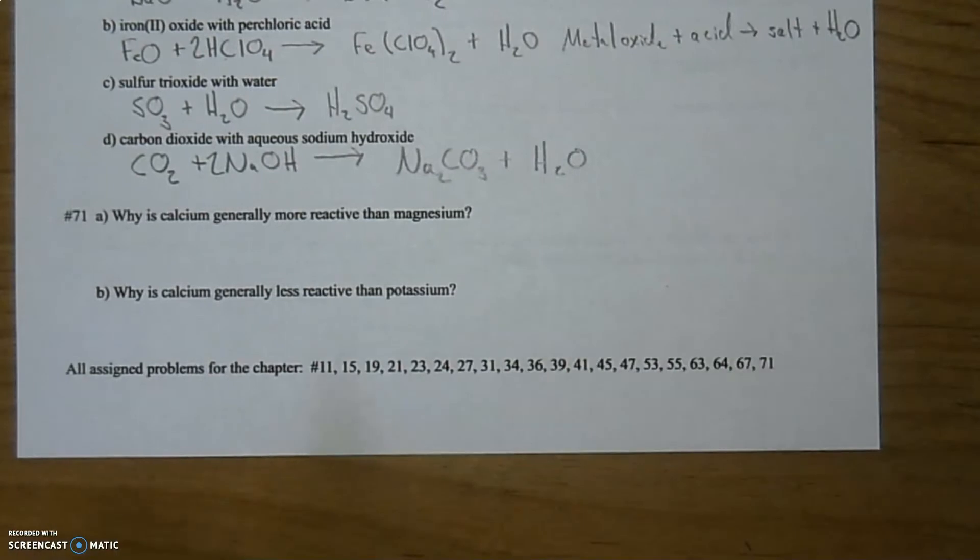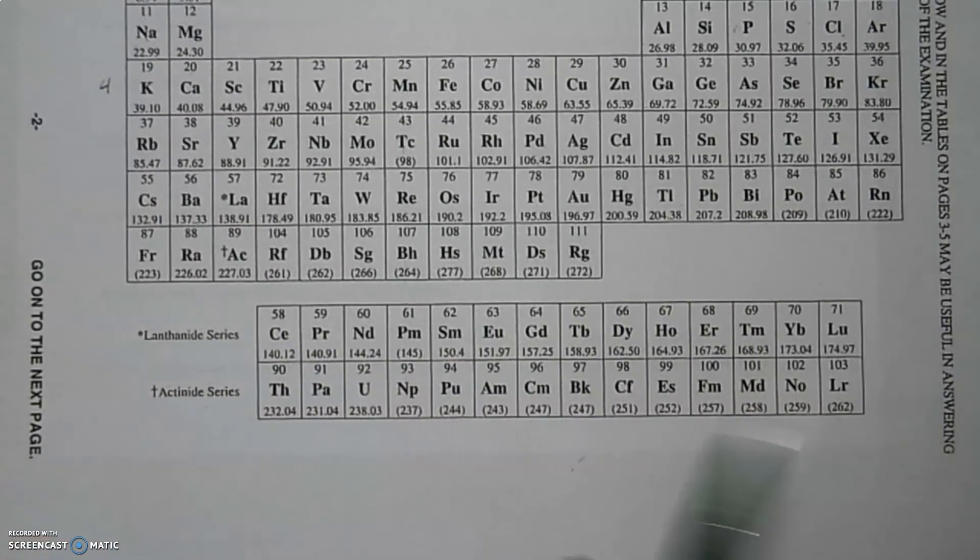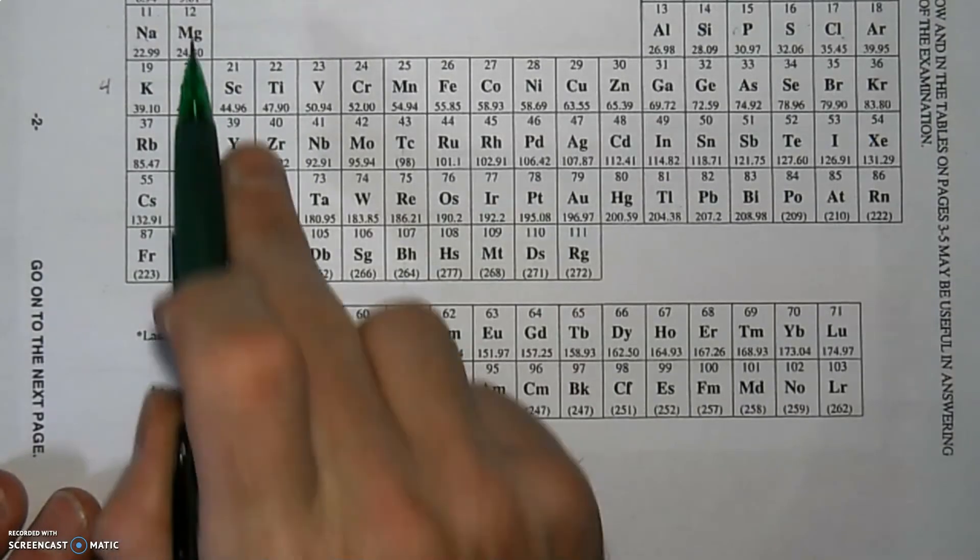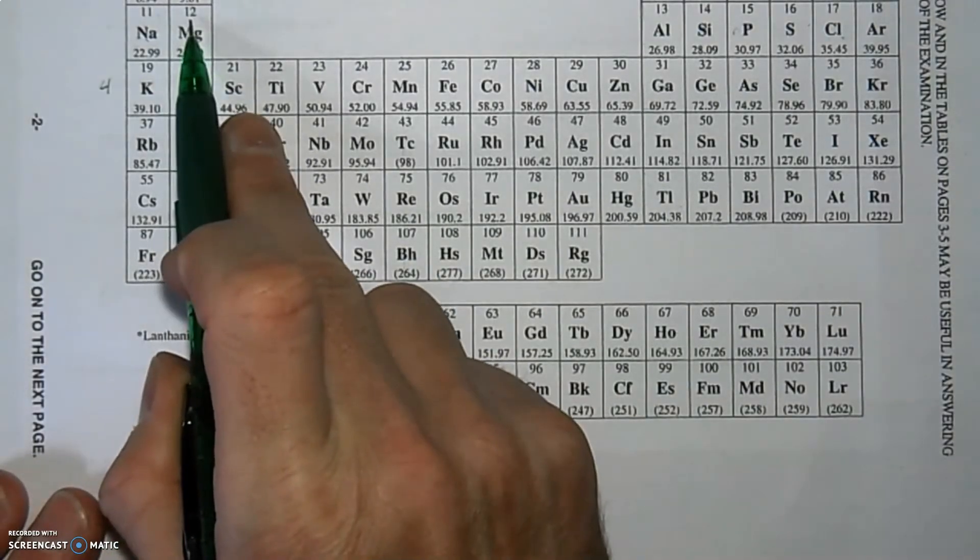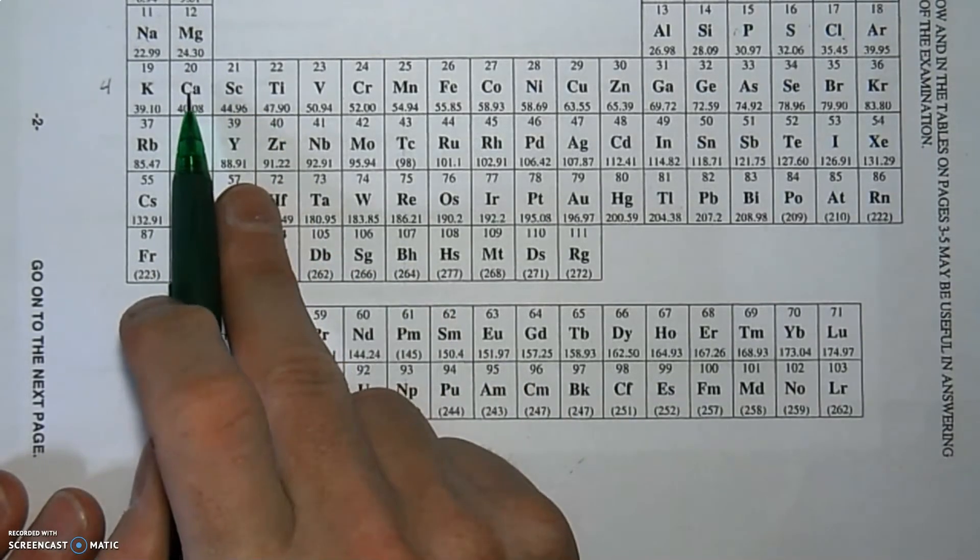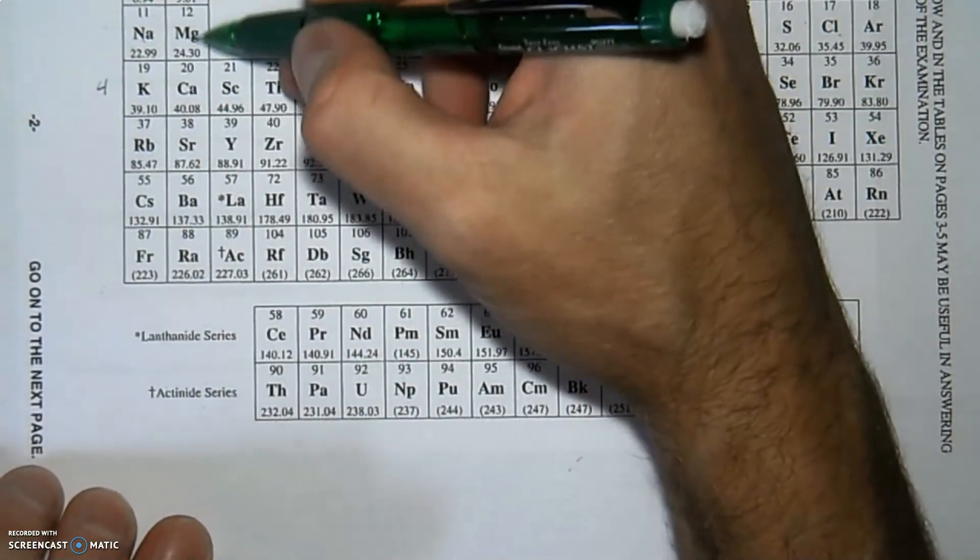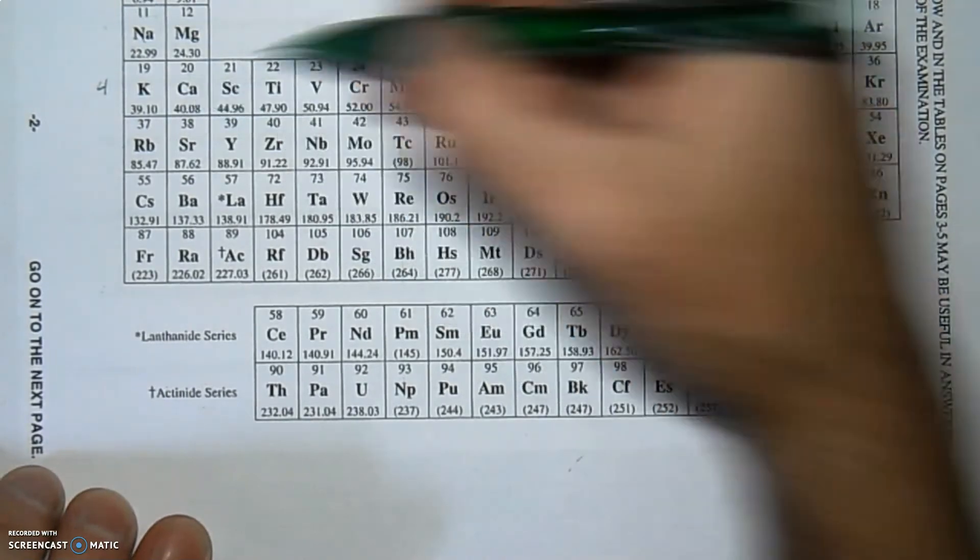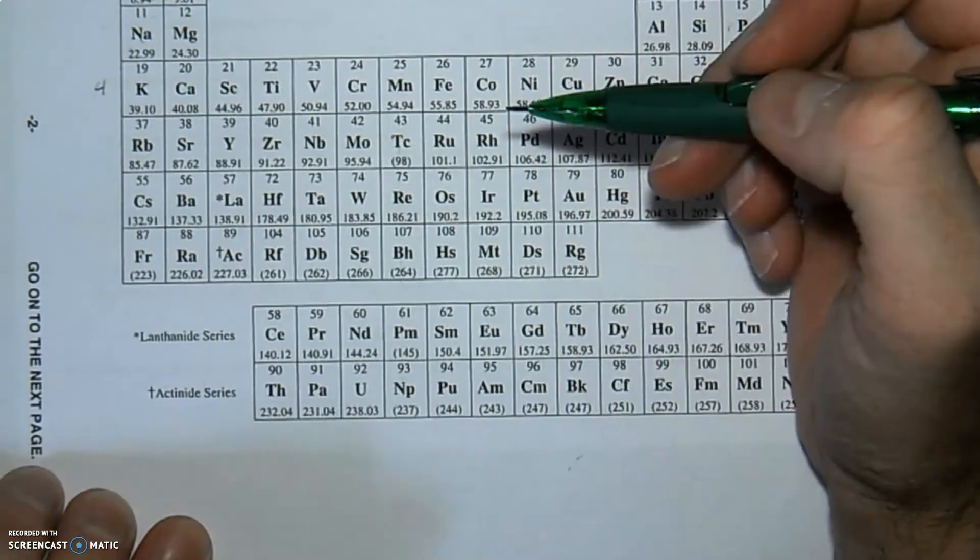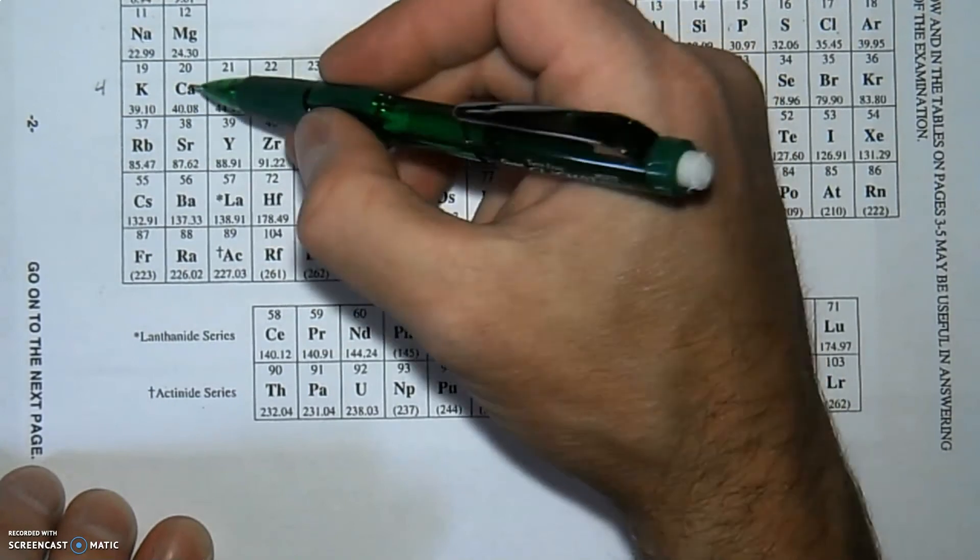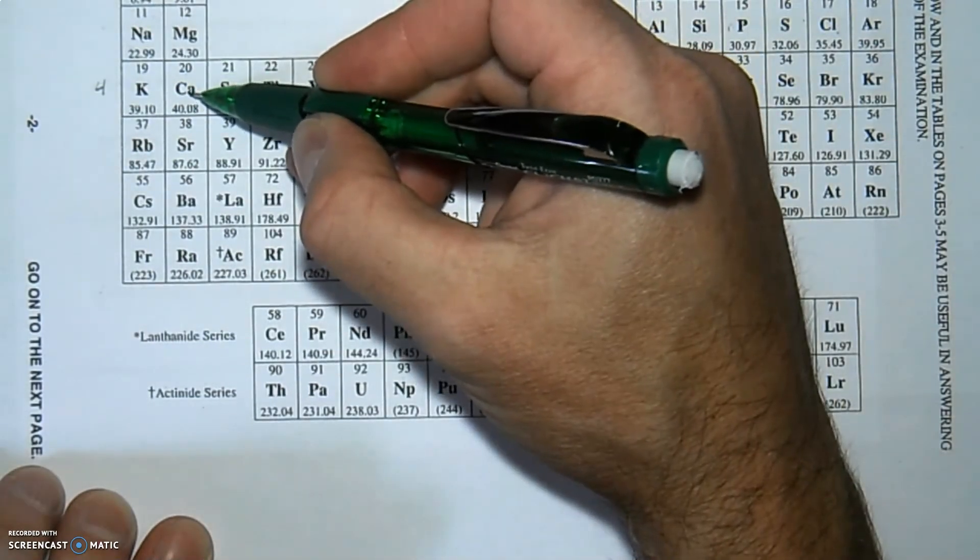All right. Let's bounce over to 71. Why is calcium generally more reactive than magnesium? So let's take a look at these guys here. Calcium and magnesium. Why is calcium generally more reactive than magnesium? So let's back up and not think about the question. Let's think how they relate to each other. They're in the same row. So as far as going left to right, that doesn't seem to change anything. It's all up and down.